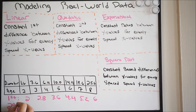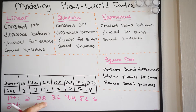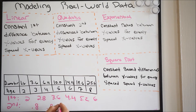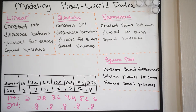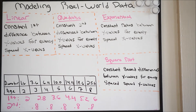For the second difference, we use the values from the first difference. So 2.8 minus 2 gives 0.8. Then 3.6 minus 2.8 is 0.8. Then 4.4 minus 3.6 is 0.8. Then 5.2 minus 4.4 is 0.8. And 6 minus 5.2 is also 0.8. For my second difference, I have a constant of 0.8, so a square root function is the best fit for this data.